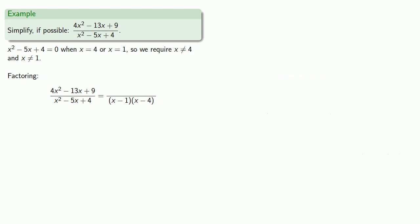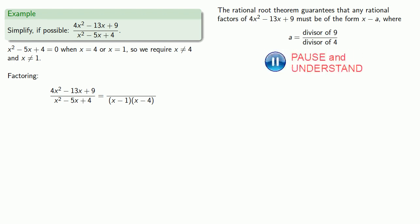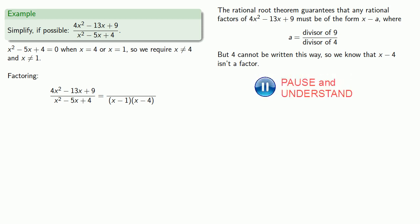This is where the rational root theorem comes in handy. The rational root theorem guarantees that any rational factors of 4x squared minus 13x plus 9 must be of the form x minus a, where a is a divisor of 9 over a divisor of 4. But 4 can't be written this way, so we know that x minus 4 isn't a factor. Since 1 could be written this way, x minus 1 might be a factor, but we have to check.